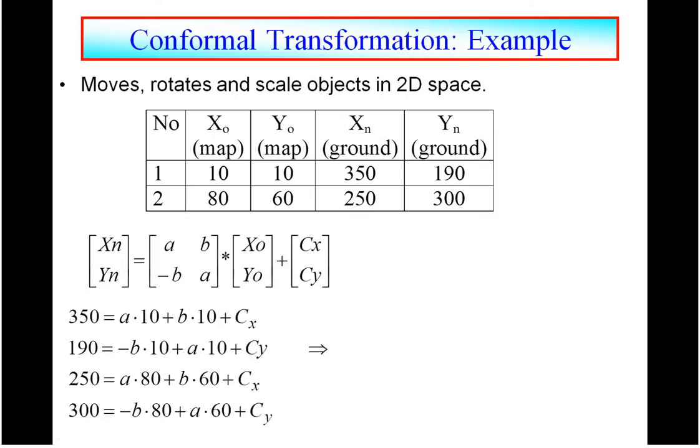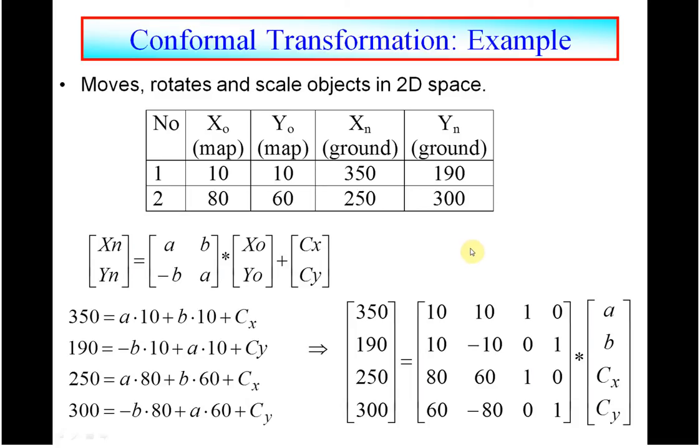We have an example here. We mentioned that we need a minimum of two pairs of points. So we have the x, y0 is 10, 10, and the new points after the conformal translation is 350, 190. And for point two, the old points were 80, 60, and the new points are 250, 300. We wrote that in a matrix format here.